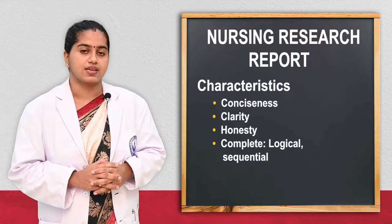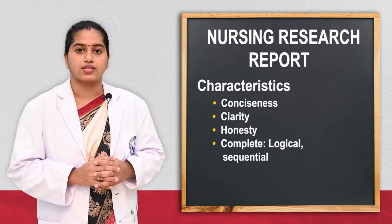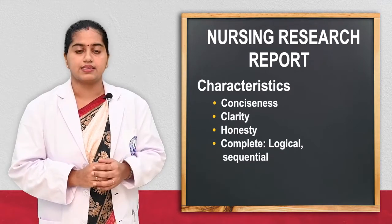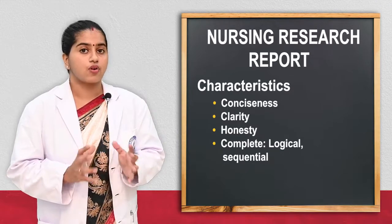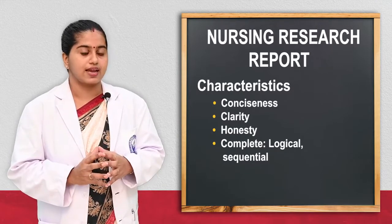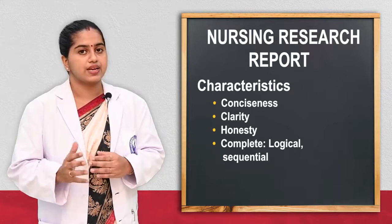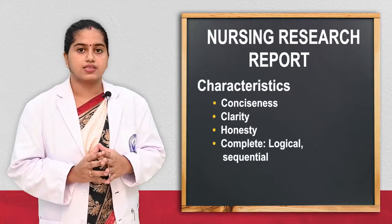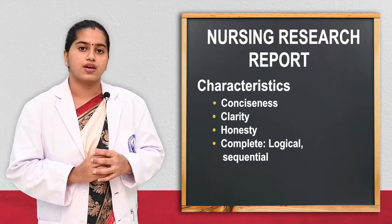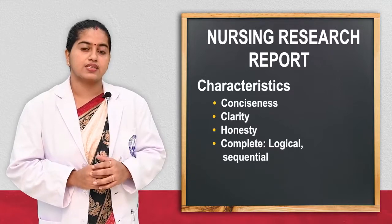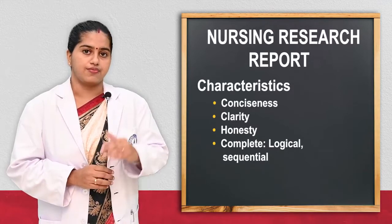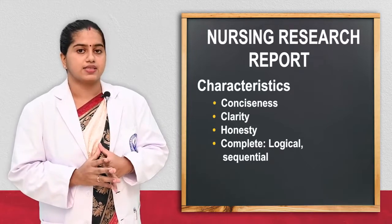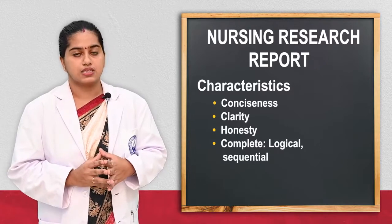Third one is honesty. Whatever the research report, it should be free from bias, jargons, or errors, and no fraud should be done. That will ensure honesty and build a relationship between the reader and the researcher. And next one is completeness — whatever the research report work, it should have logical sequences and be complete from top to bottom. Whatever the researcher's findings, it should have completeness, then the readers will be satisfied by the research report.